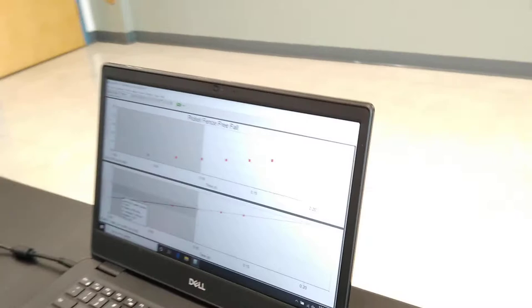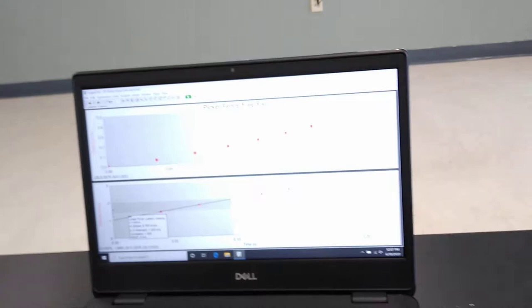If we come over here to the computer, this is in the Vernier software. It's Lab 5, the picket fence freefall. We'll go to the velocity over time graph.